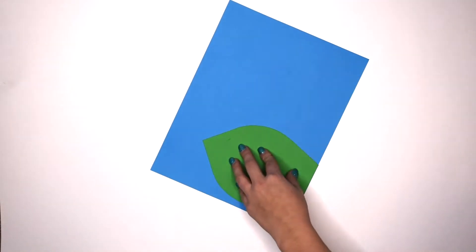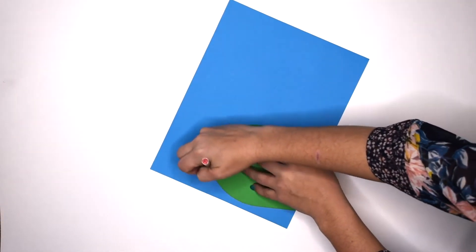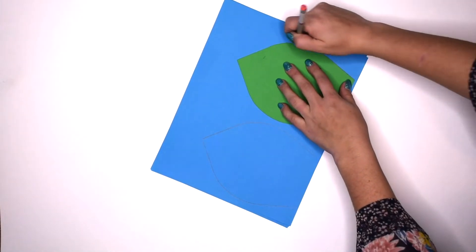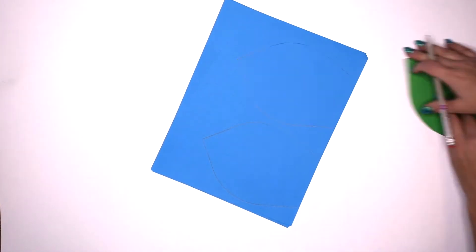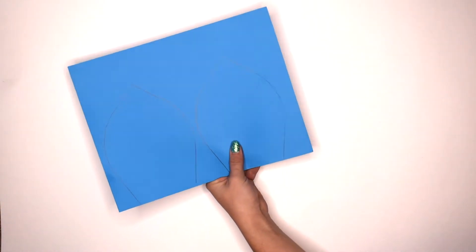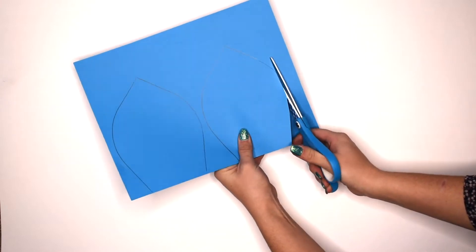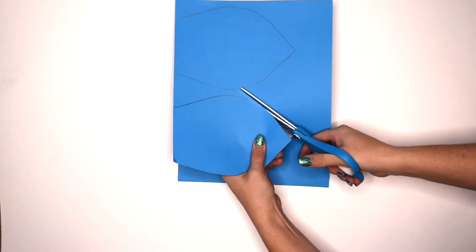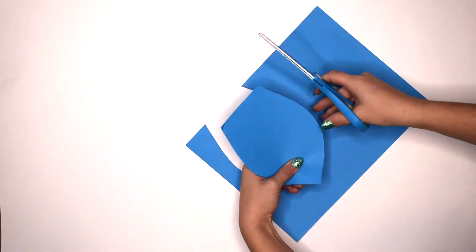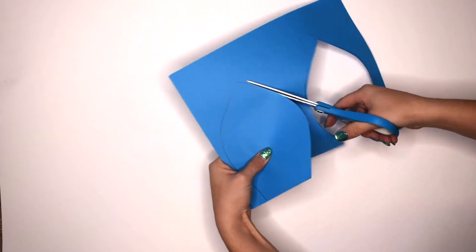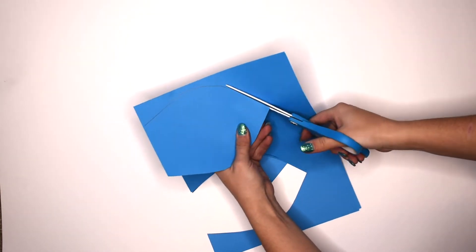These flower templates are actually a product in our Teachers Pay Teachers store. We will list the link down below. This product comes with six different types of flowers, so some that are pointed, some that are more round, some that have scalloped petals. Within that there are four different size petals for each flower. This product also comes with a guide with step-by-step tutorial directions as well.